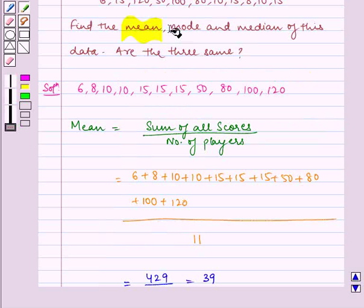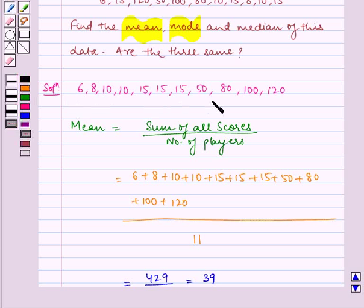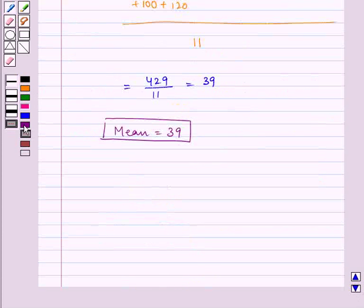Now we have to find the mode. Here we can see that the most occurring score is 15. Therefore, mode equals 15.